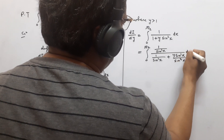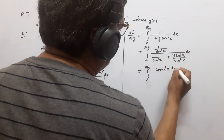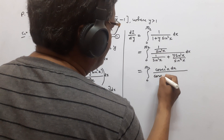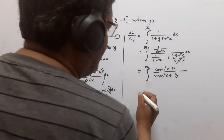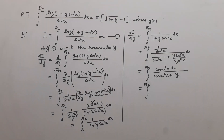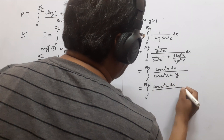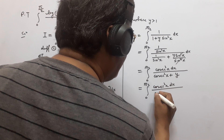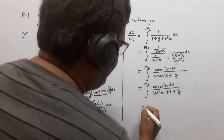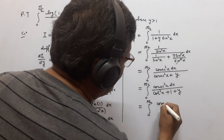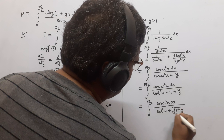For integration we divide the numerator and denominator by sin²x. Now 1/sin²x in the numerator becomes csc²x. In the denominator, 1/sin²x gives csc²x and sin²x cancels to give y, and csc²x = 1 + cot²x. So in the denominator we write cot²x + (1 + y), which equals cot²x + (√(1+y))².